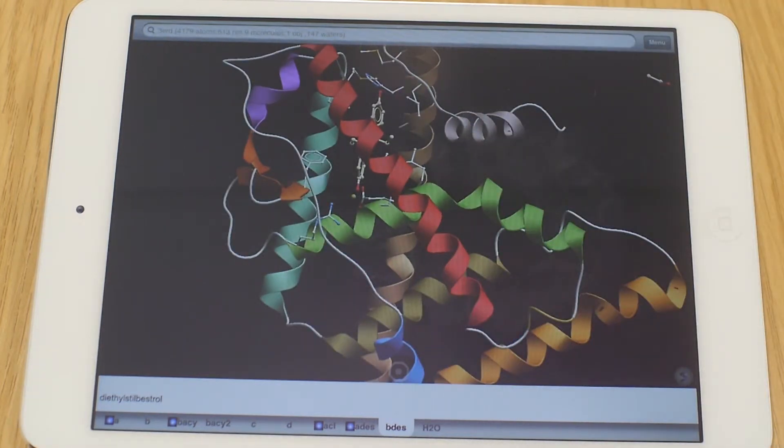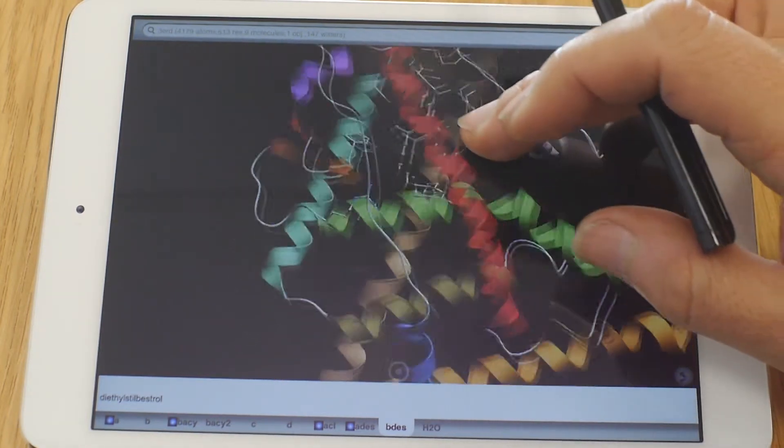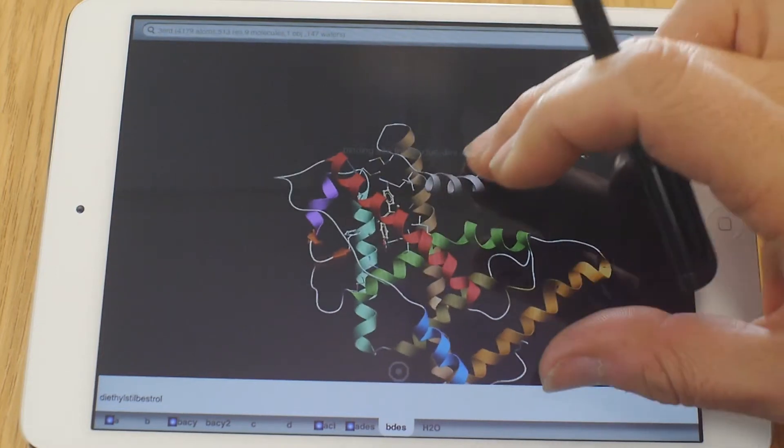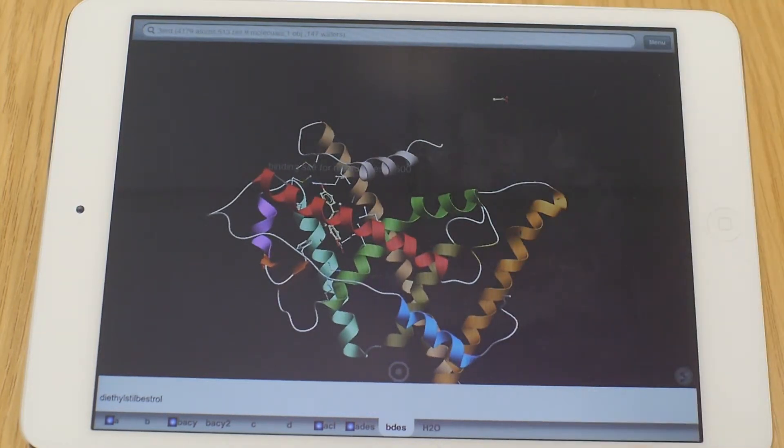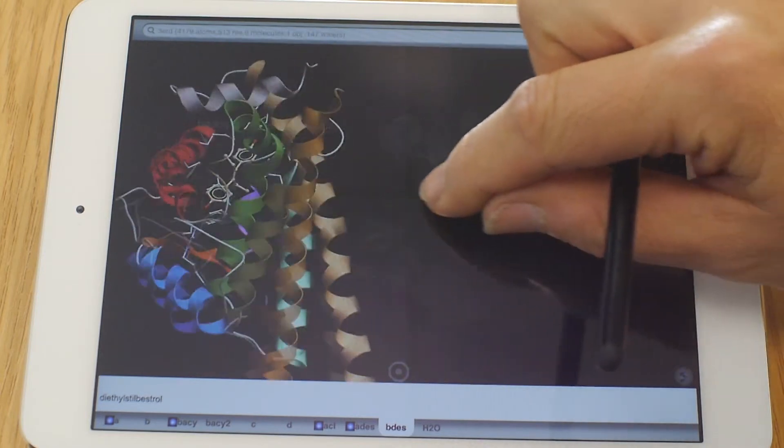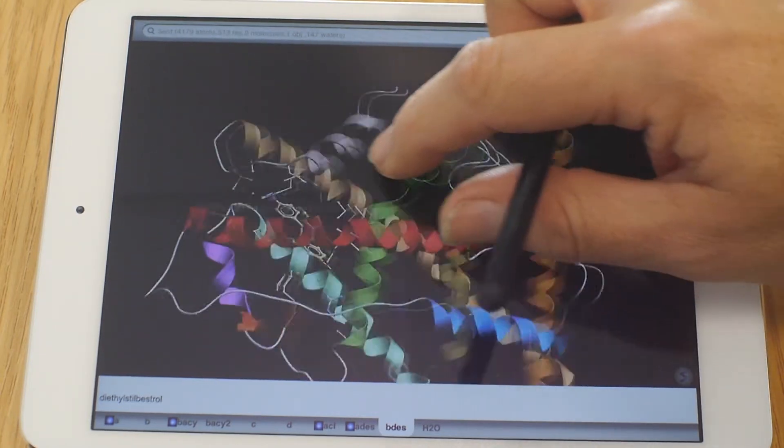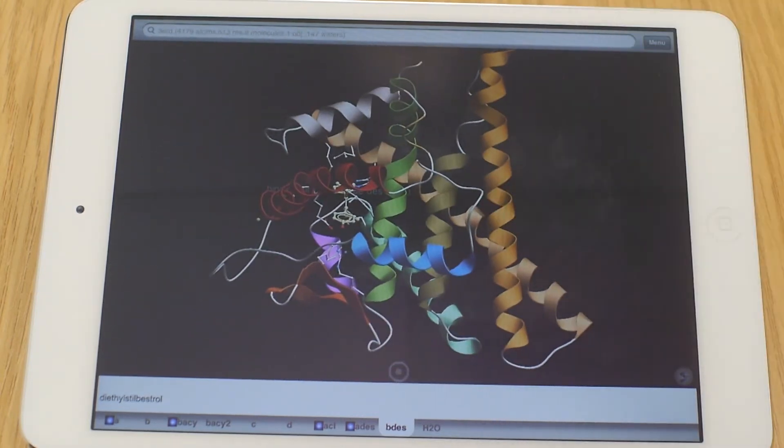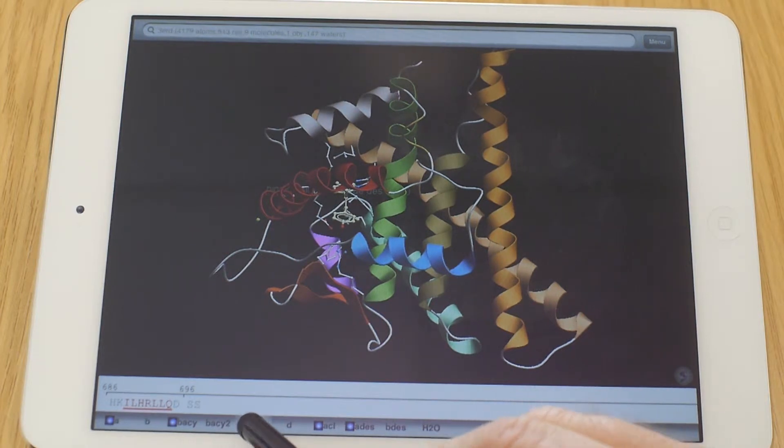Now if you click at the right buttons here in the bottom, you can visualize parts of what actually was acquired when they got the crystal information. So you can basically define the view that you want to have. And it shows you the sequence always, so you know what is what.